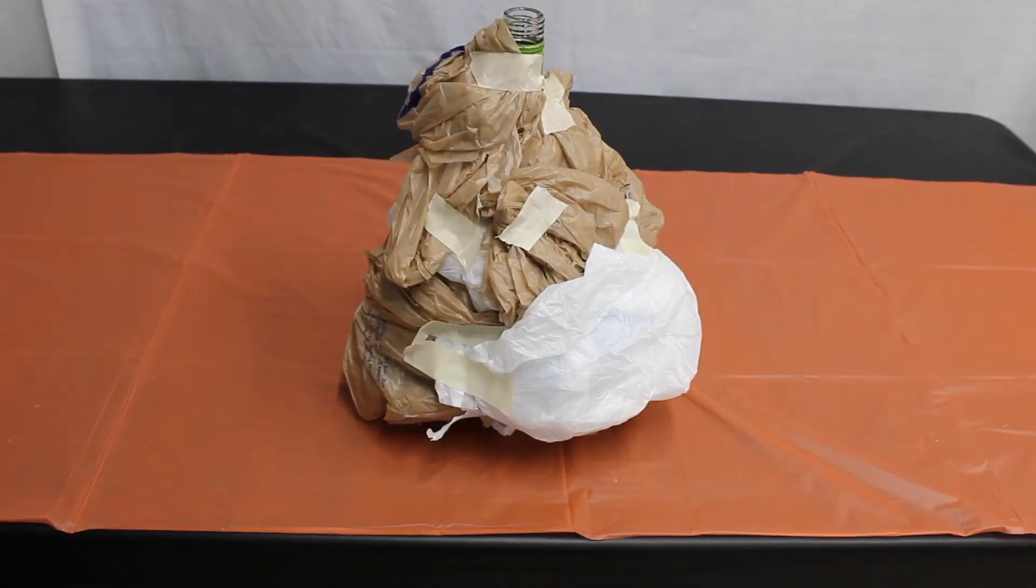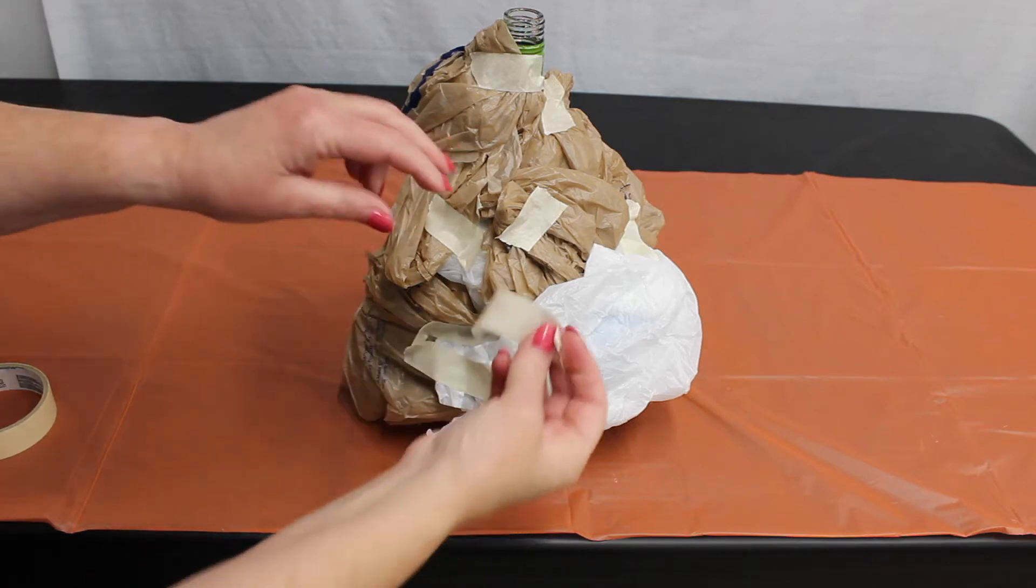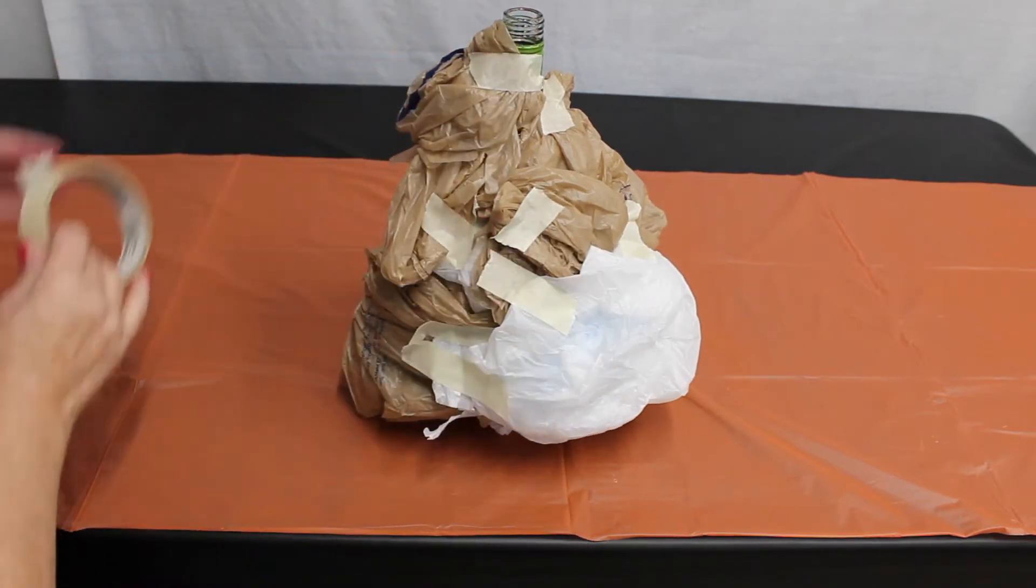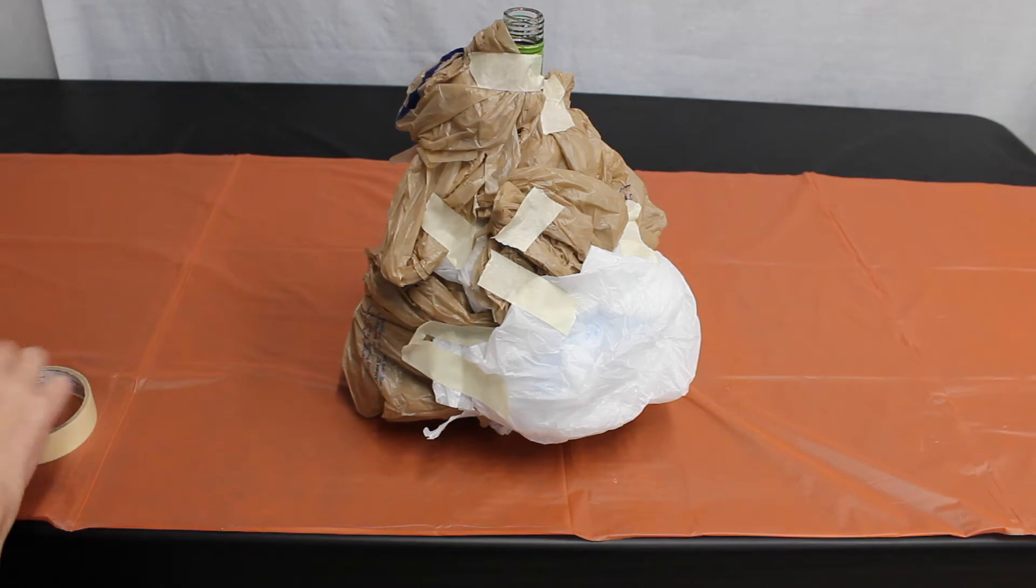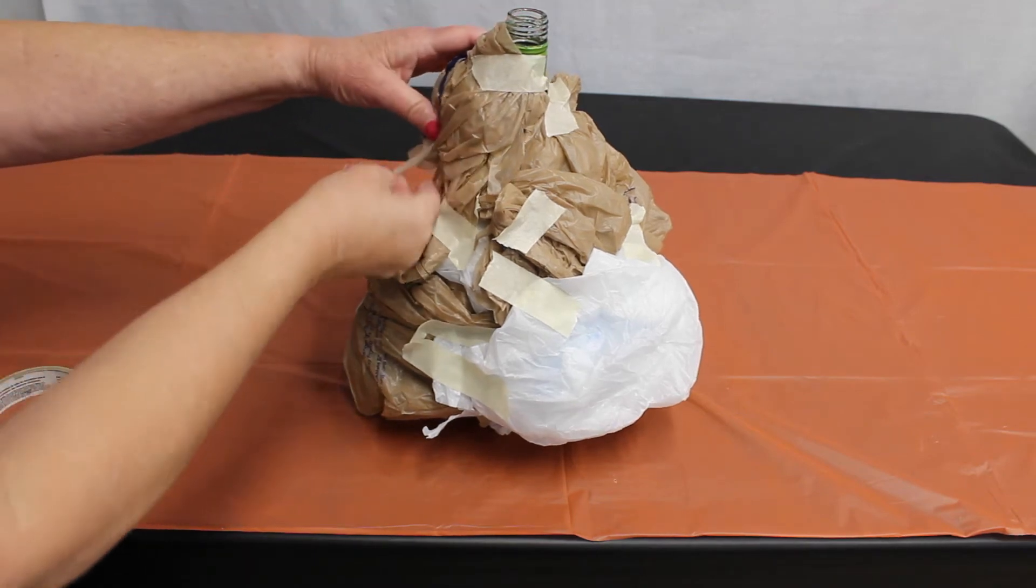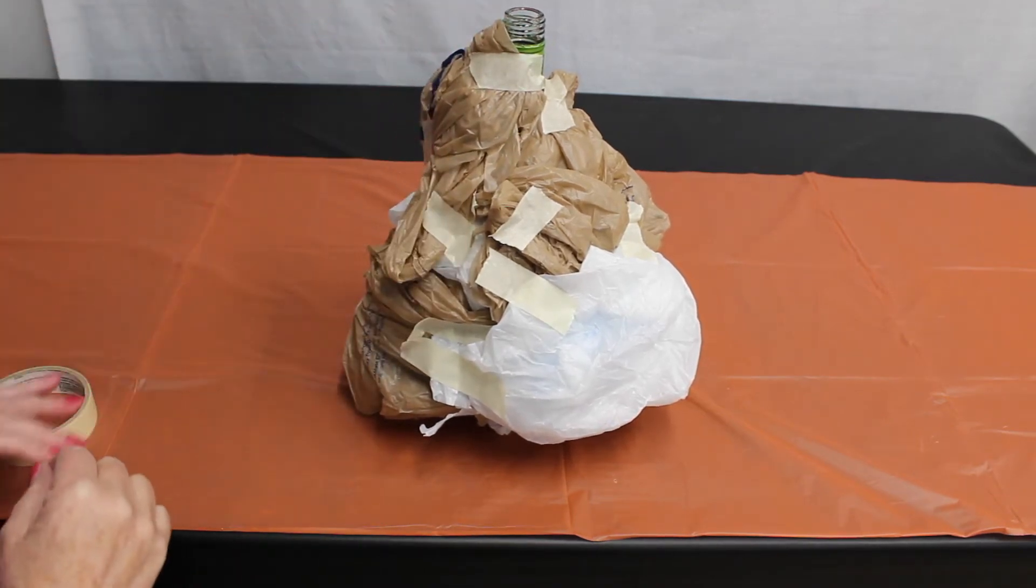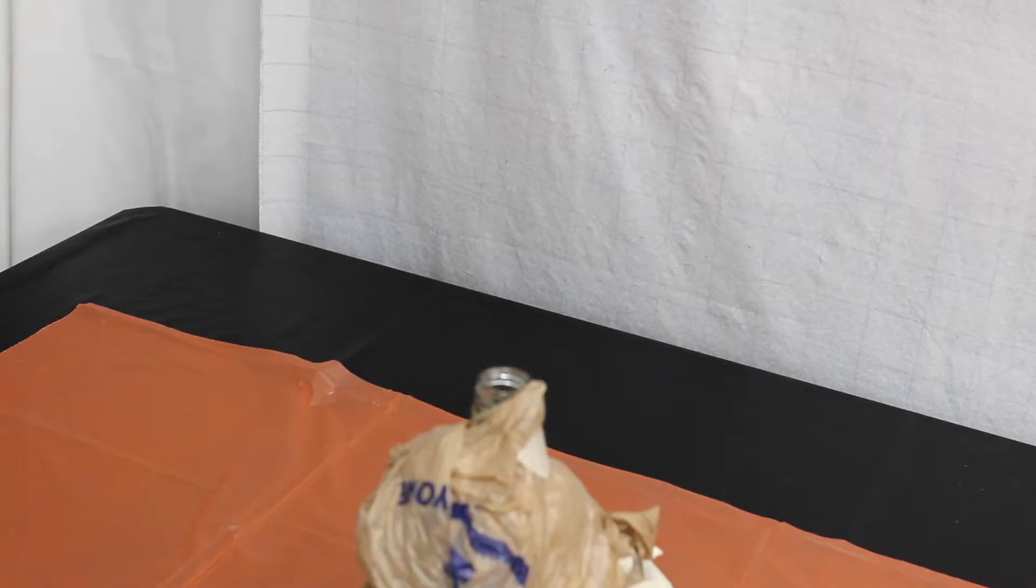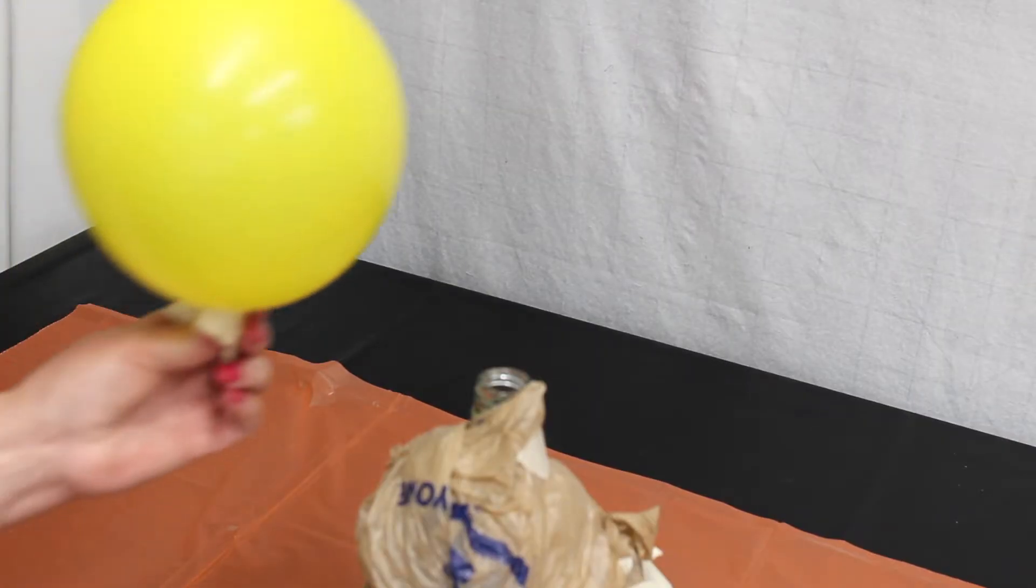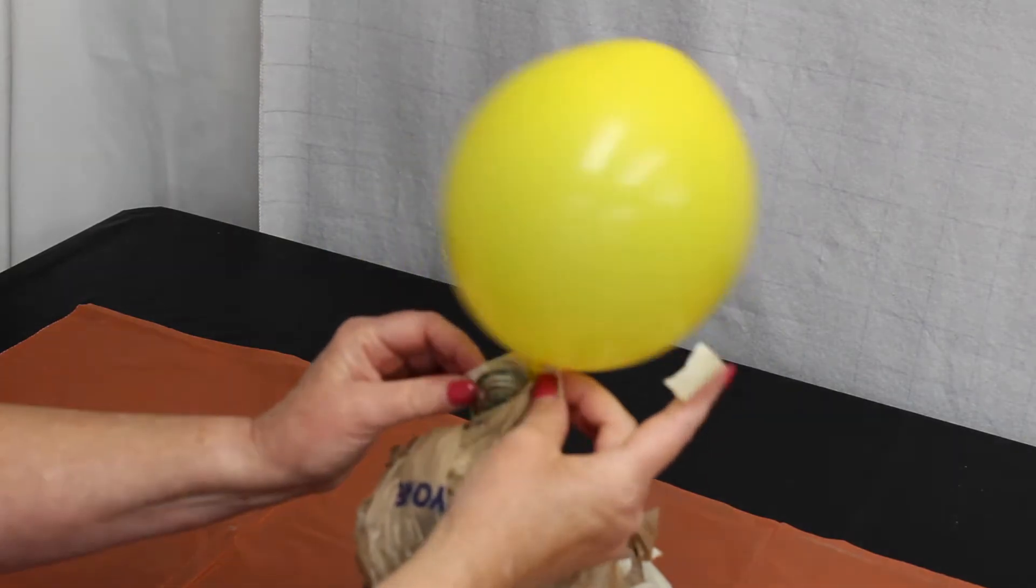You're going to start by putting plastic bags around your bottle and securing it with masking tape. We're doing this so that the ghost will bellow out and it won't stick to the glass bottle. Next you're going to blow up a balloon (this is a round balloon) and attach it to your bottle.